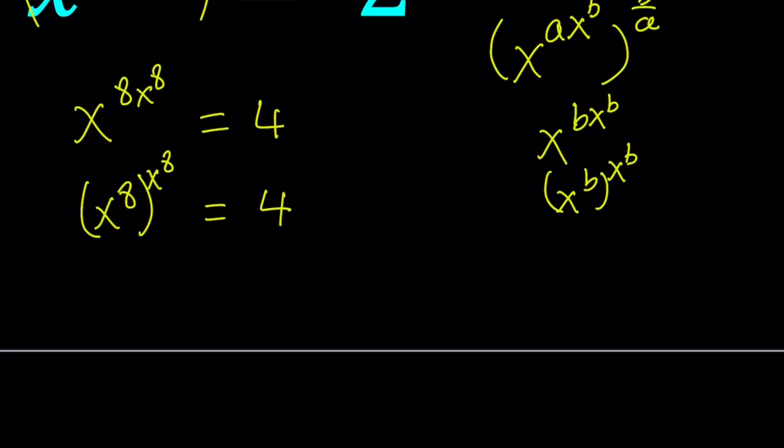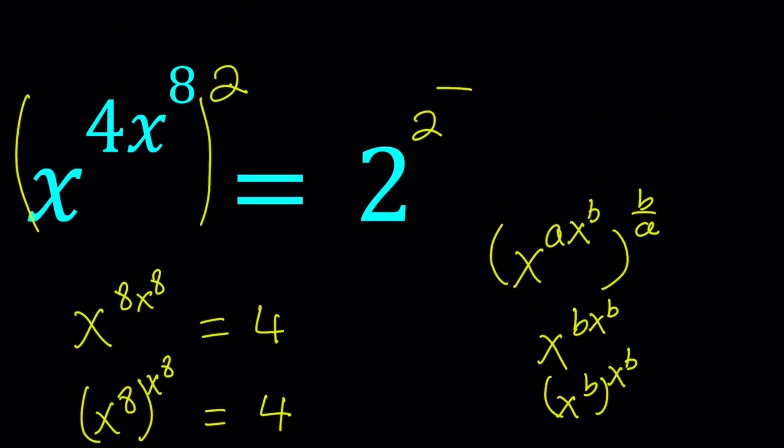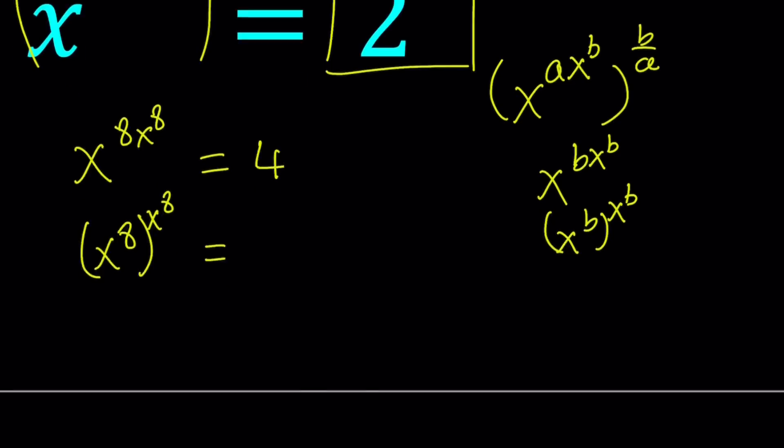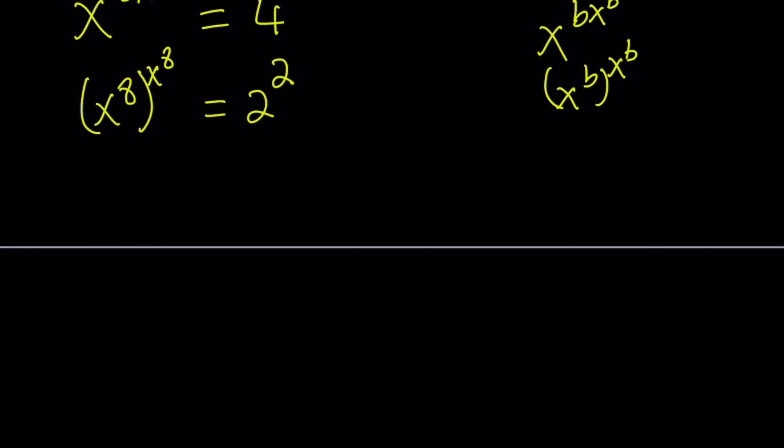Now, not only is this good, but also on the right-hand side, we have something similar. Because 4, notice that we were able to write it as 2 to the 2nd power. So instead of writing it as 4, let's go ahead and stick with 2 to the 2nd power. And what does this tell you? If x to the power 8 is equal to t, then this gives us t to the t equals 2 to the 2. And this should tell you at least that there's one solution, and that is t equals 2. So we know that t equals 2 works, but we also got to prove that that is the only solution.